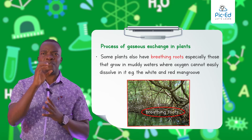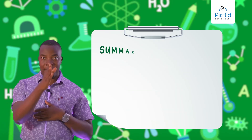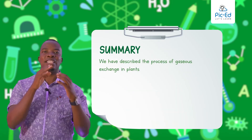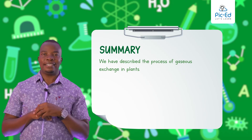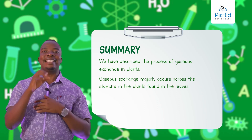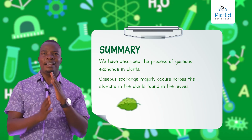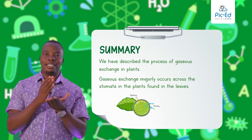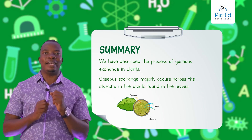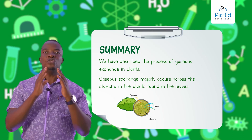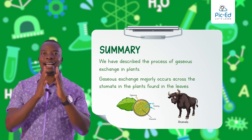Those are the three surfaces for gaseous exchange in these plants. In summary, we have described the process of gaseous exchange in plants. We have realized that gaseous exchange majorly in plants takes place across the stomata found on the lower surface of the leaf. In conclusion, we have also discovered that these plants do not have the complex and specialized gaseous exchange surfaces like animals.